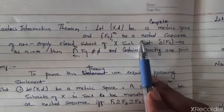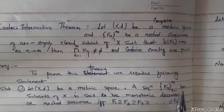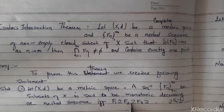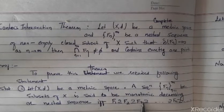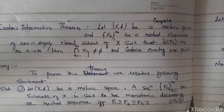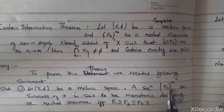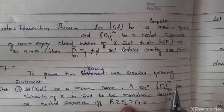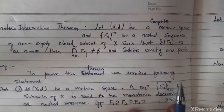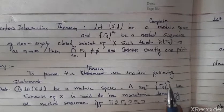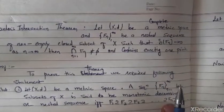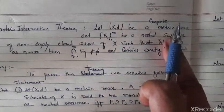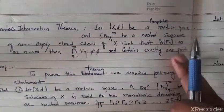The second thing is the nested sequence. What is a nested sequence? If there is a sequence, the nested condition means F1 contains F2, F2 contains F3, F3 contains F4, and so on — Fn contains Fn+1. Also, the diameter of Fn will be reduced, tending to zero. This is the nested sequence condition.